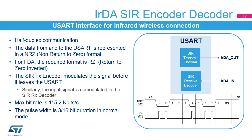The USART supports IRDA specifications, which is a half-duplex communication protocol. The data from and to the USART is represented in NRZ (non-return to zero) format, where the signal value is at the same level through the entire bit period. For IRDA, the required format is RZI (return to zero inverted), where a one is signalled by holding the line low and a zero is signalled by a short high pulse. The SIR transmit encoder modulates the NRZ transmit bitstream from the USART; the SIR receive decoder demodulates the return-to-zero bitstream from the infrared detector and outputs the received NRZ serial bitstream to the USART. The USART only supports bit rates up to 115.2 kbps for the SIR ENDEC. In normal mode, the transmitted pulse width is specified as 3/16th of a bit period.